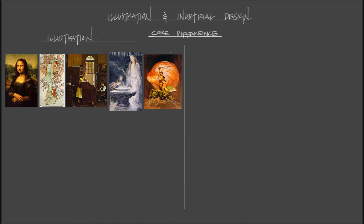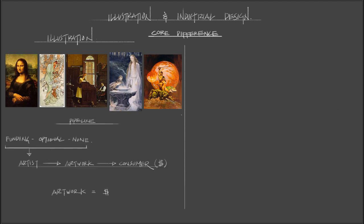What makes this different from industrial design? The main difference is that illustration is produced directly for the consumer. The consumer can see this illustration — that is exactly what the eyeball is seeing. And also, the money is attached directly to this illustration.